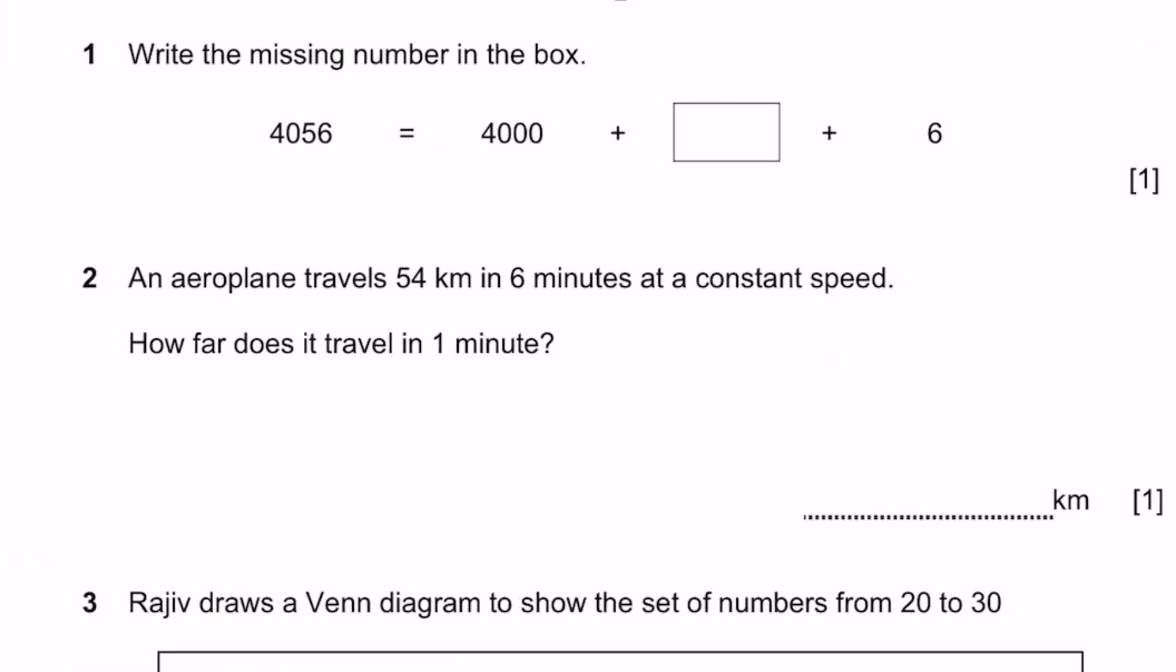Question 1. Write the missing number in the box. 4056 equals 4000 plus dash plus 6. We bring both of these to the other side, that means minus 4000 and minus 6, which are minusing the thousands place and the ones place, which means you're left with 50. So 50 is the answer.